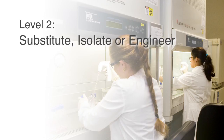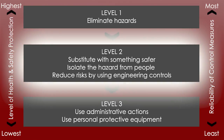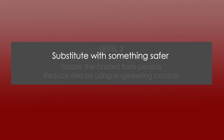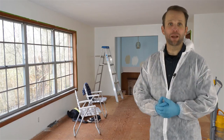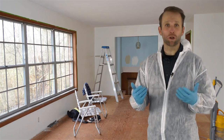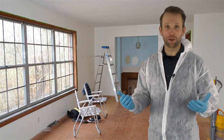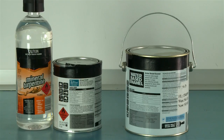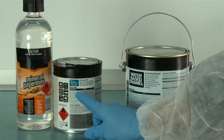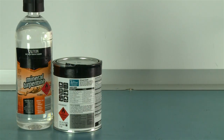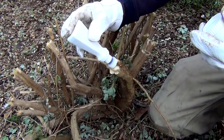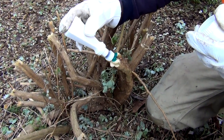Level 2: Substitute, isolate or engineer. Where we can't eliminate a chemical from a work process, there are other approaches we can use to minimise the risks. Substitution: with advances in paint technology, I now find I can use water-based paints for so much more than I could before and I feel so much better for it. We can substitute a chemical with a less hazardous one, or use a chemical in a form that reduces the chances of exposure, like using a paste instead of a powder.